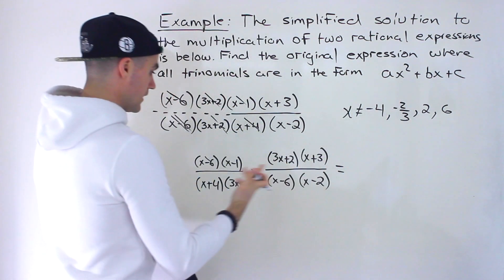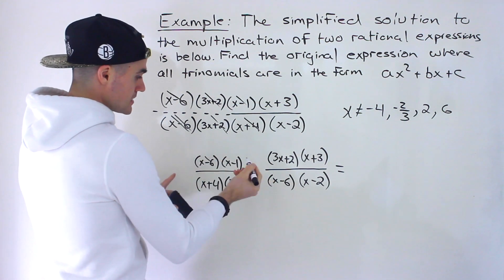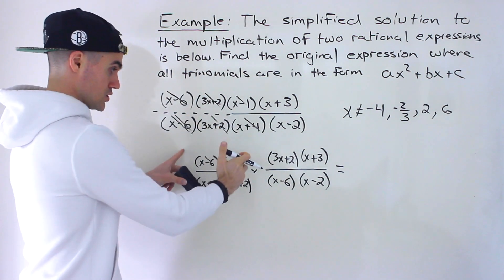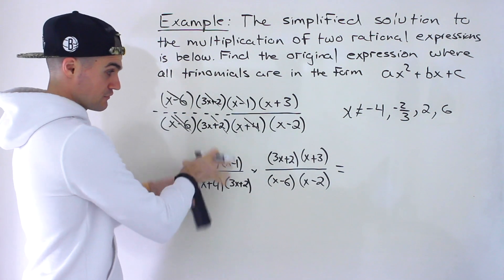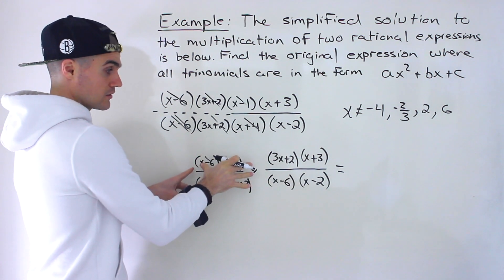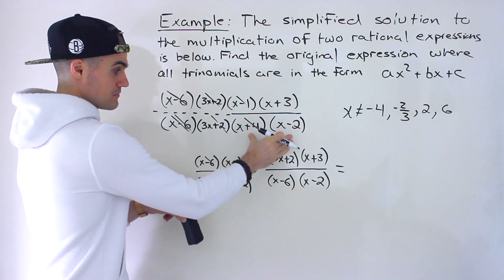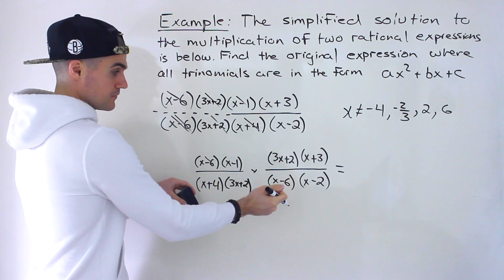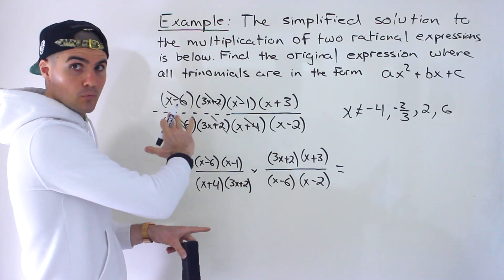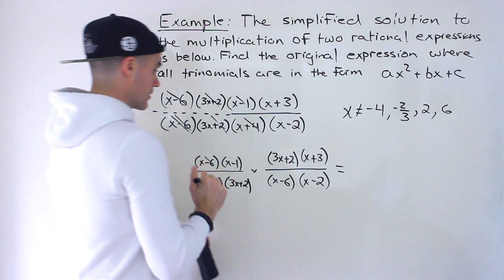What we do is expand all the factored expressions. Usually we're given expanded expressions and then we factor them — now we're going backwards. We were at the simplified step, then we got to the factored step before things cancel out, and now we have to go back to the expanded step. So all of these are going to get expanded.